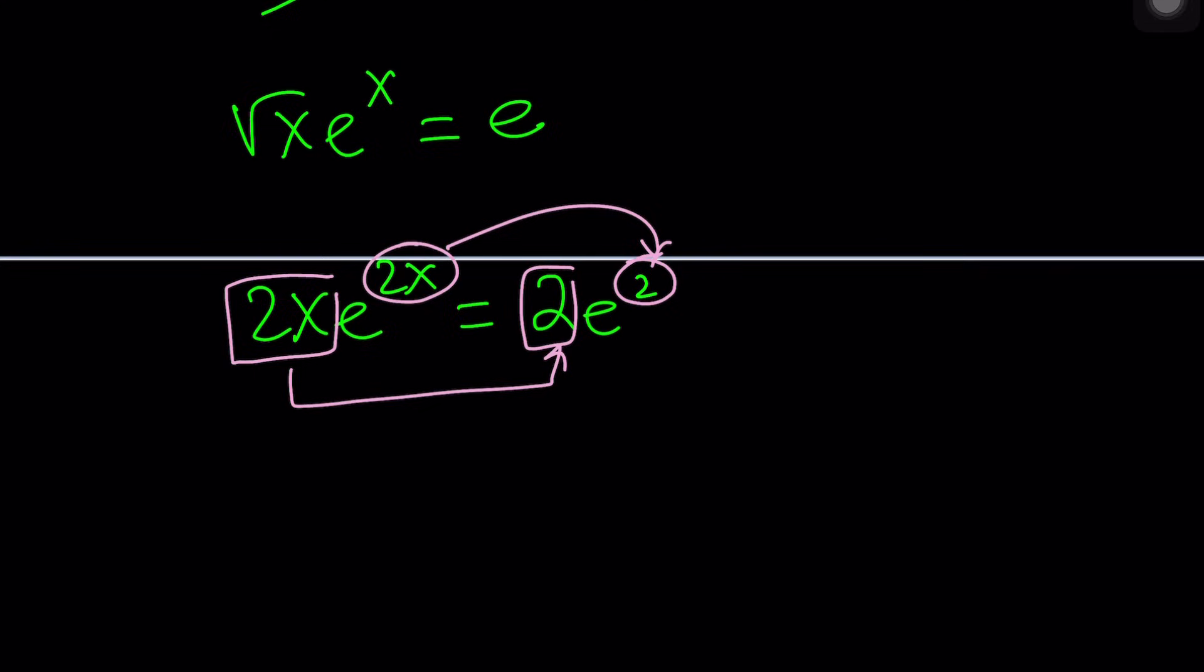But again, you need to check whether there are any other solutions. So it kind of brings us to the multiple branches of the Lambert's W function, but there's actually an easier way to find if there are any other solutions or if this is the only solution. Okay, so let's go ahead and go back to the original problem that was e to the power 1 minus x equals square root of x.